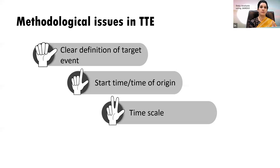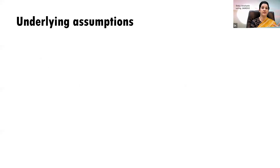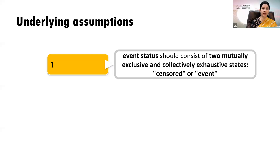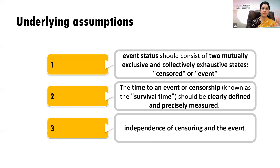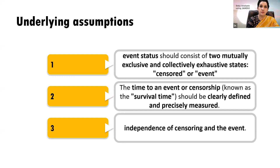You should have a clearly defined start time, documented follow-up time, time scale, and how participants will exit the study. Assumptions before running Kaplan-Meier: first, event status should have two mutually exclusive categories — either the individual meets the event or is censored. Second, survival time should be clearly defined and precisely measured. Third, censoring must be independent of the event — meaning the censored individuals must not have already met the event during the study period.